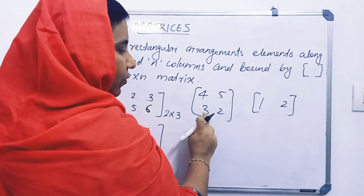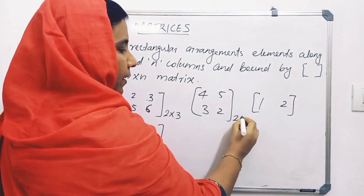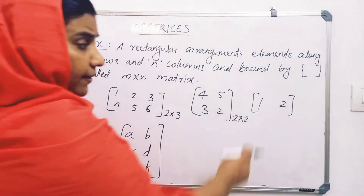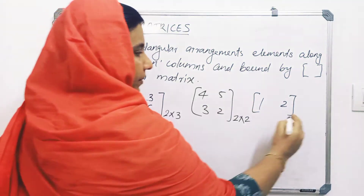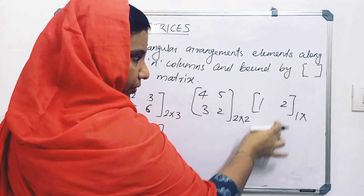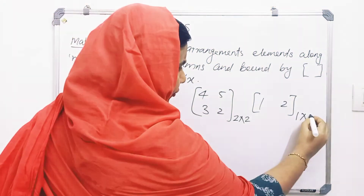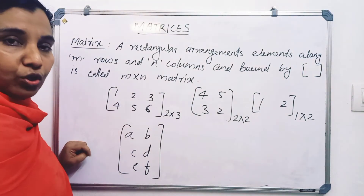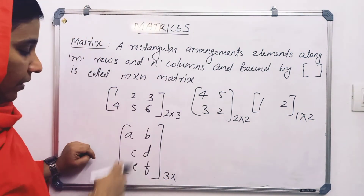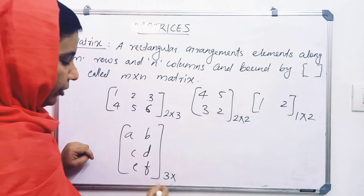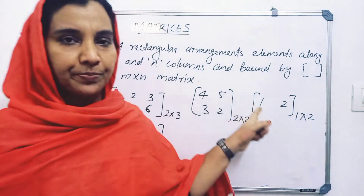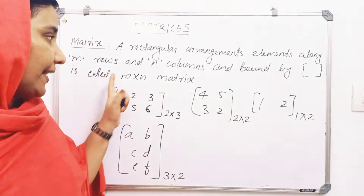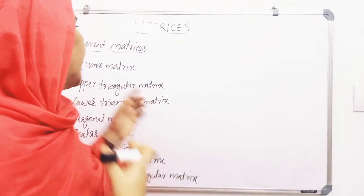This is the number of rows. For example, 4, 3, 5, 2 is a 2 by 2 matrix. A 1 by 2 matrix has one row and two columns. With alphabets A, B, C, D, E, F arranged in 3 rows and 2 columns, it is a 3 by 2 matrix. The order is number of rows by number of columns.